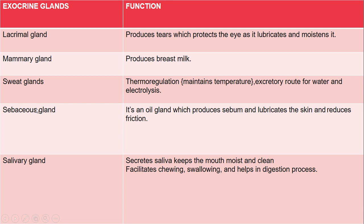The sebaceous gland is an oil gland which produces sebum and lubricates the skin, reducing friction. This lubrication keeps the skin soft and maintains the correct texture. Without it, the skin becomes very dry. So the sebaceous gland keeps the skin moisturized and prevents it from becoming dry.